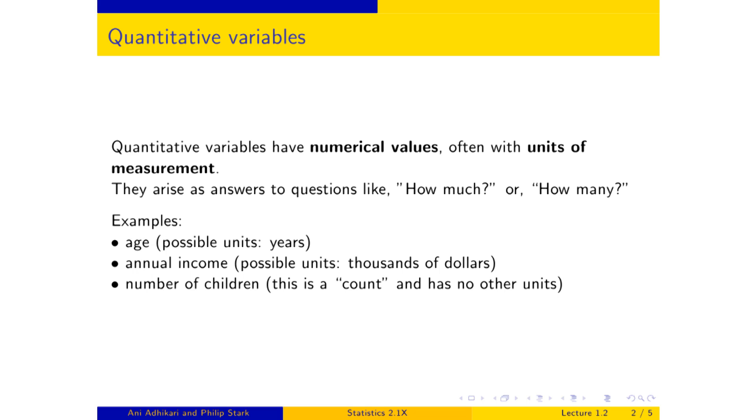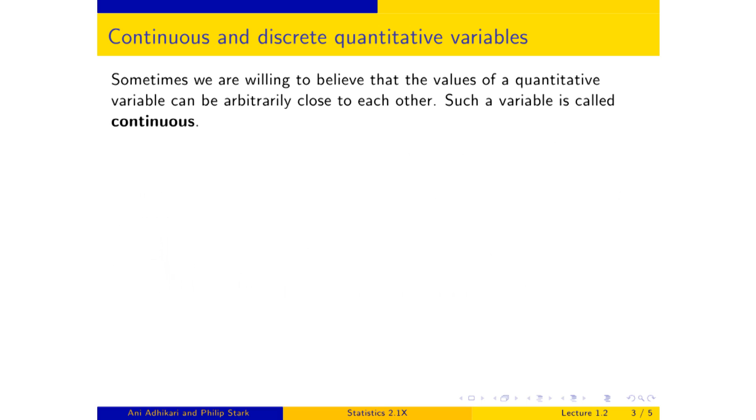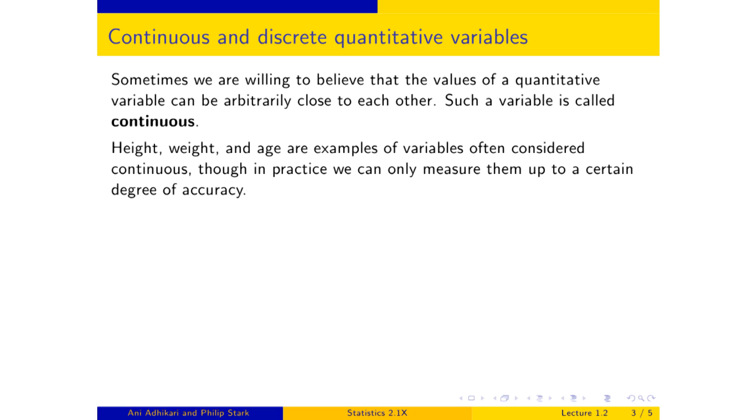Quantitative variables are of two kinds commonly, though of course there are many other kinds as well. The most common is the kind of variable where you're willing to think that successive values of the variable can be arbitrarily close to each other. So for example, two people can be as close as you can imagine in height, even if they're not exactly equal in height. Such variables are called continuous. Typical examples are height, weight, age, and so on.